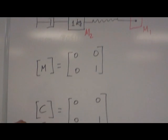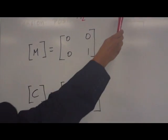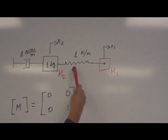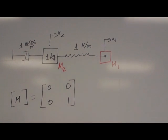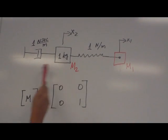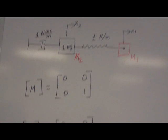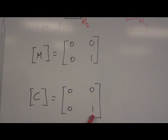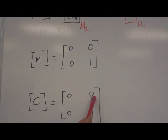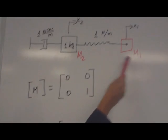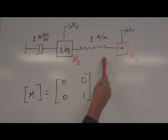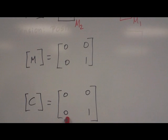If we take the damping matrix for the mass 1, how many damping connected? There's nothing. So 0. For mass 2, we have 1 damping. So 1. C12 is a damping between M1 and M2. There is no damping between M1 and M2, so 0. So C21 is C12, which is 0.